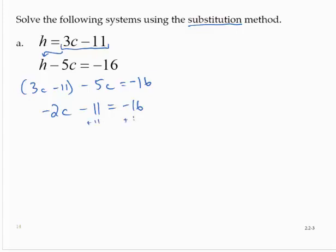negative 2c equals negative 5. Dividing by negative 2, c equals 5 halves, or 2.5. We'll go with 2.5.